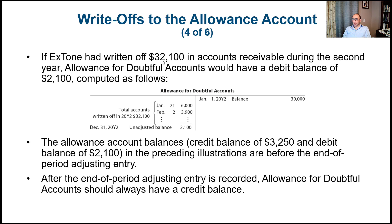If X-Tone had written off more than $30,000 — say $32,100 — the allowance for doubtful accounts would have a debit balance of $2,100. The allowance account balances — a credit of $3,250 or a debit of $2,100 — are before the end-of-period adjusting entry. After the adjusting entry is recorded, the allowance for doubtful accounts should always have a credit balance.